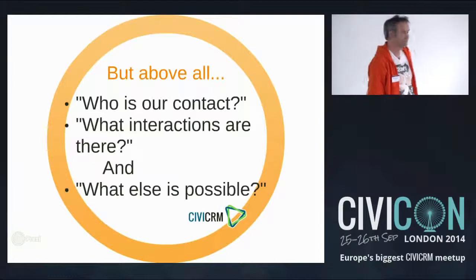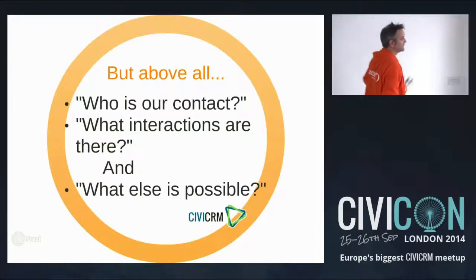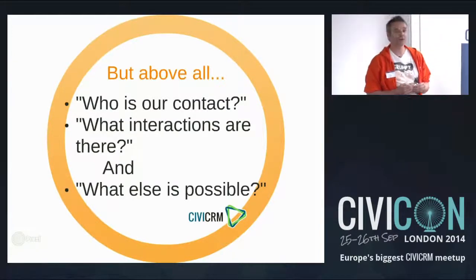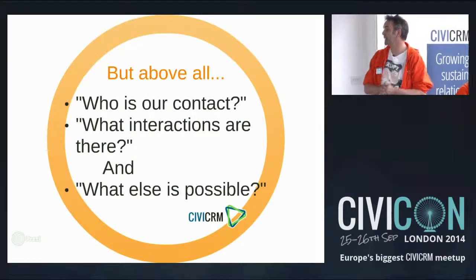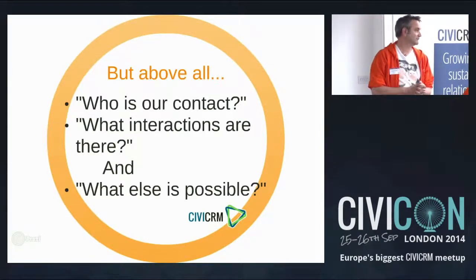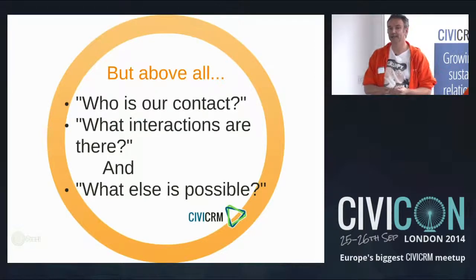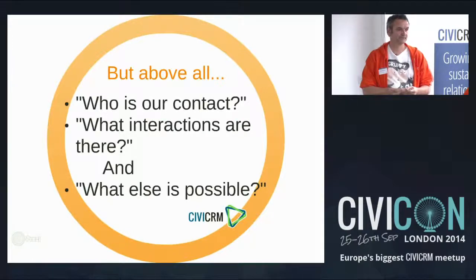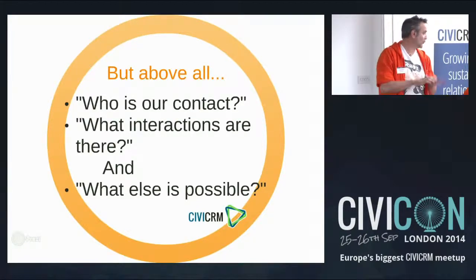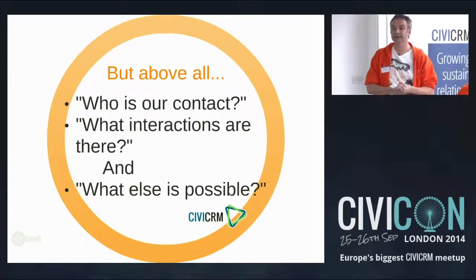It enables you to do fundraising, document contributions, grants and pledges. And if your organization has employees, it gives you insight into what they are meant to do — tasks that they have, how fast they do them, and what the result is. But most of all, what it does is: who is my contact, what interactions are there or have there been, and what else can we do to get more out of those contacts to achieve our goals? That's what CiviCRM is.